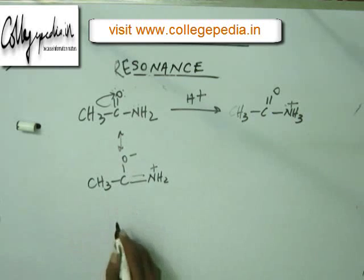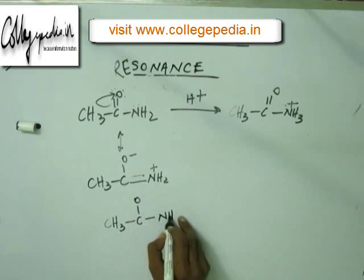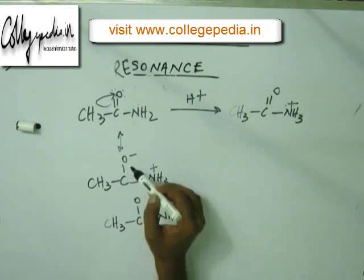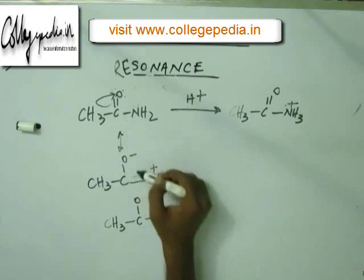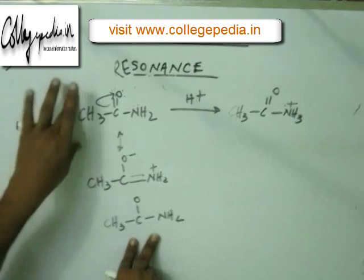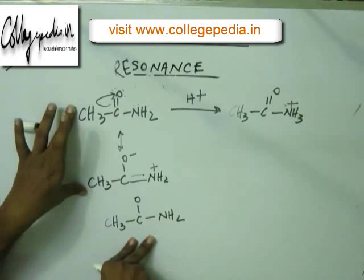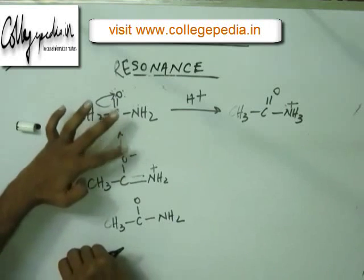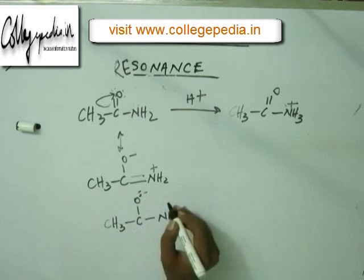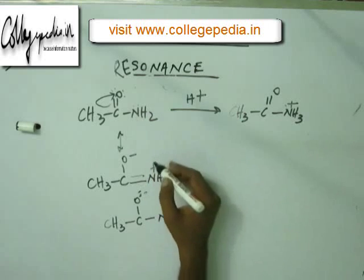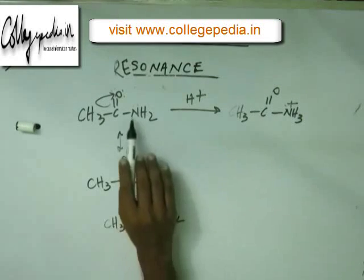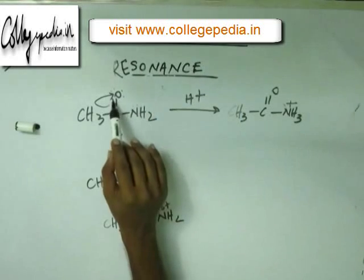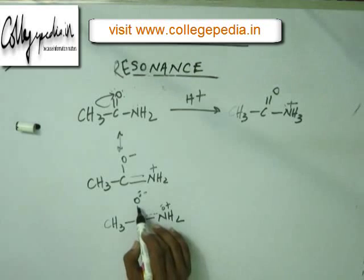If you write the hybrid, just draw the basic structure without charge and without pi bonds. Now look for charge. At oxygen: in one resonating structure oxygen is neutral; in another it has a pure negative charge. These two contribute to the hybrid. At nitrogen: in one RS nitrogen is neutral; in another it has plus charge — so nitrogen will have a del-positive charge in the hybrid. At the C-N bond position: one RS shows a pure single bond, the other a pure double bond — so it will be neither single nor double, but in between. Similarly, the C-O bond will be in between a single and a double bond. This is how the hybrid will look.